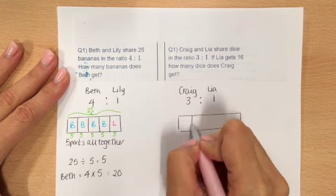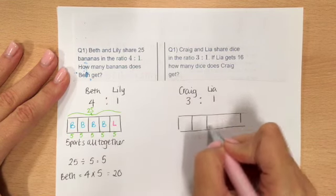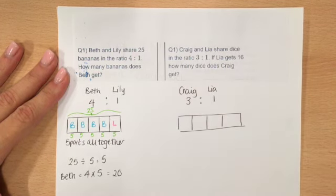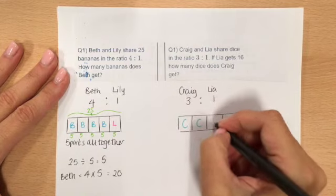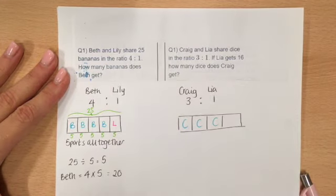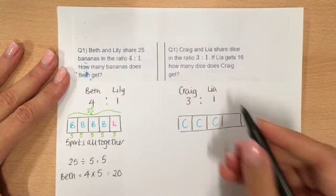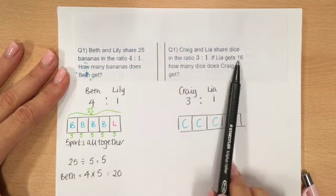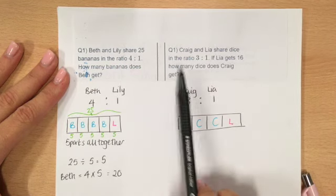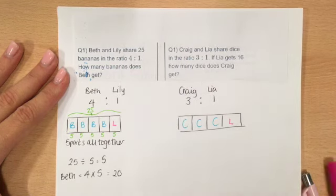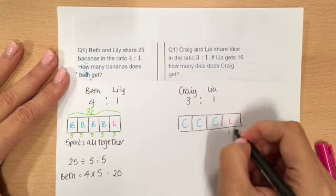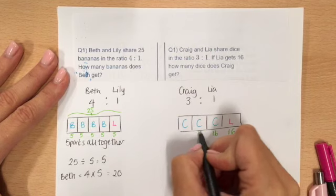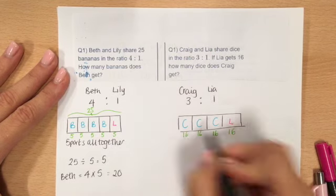So Craig gets 3 parts — so 1, 2, 3 — and Leah gets the leftover part. Craig can be blue, so this is Craig, and Leah gets 1 part. What we're told this time is Leah gets 16. So if her bar represents 16, that means each part is going to represent 16, because they're all worth the same amount.